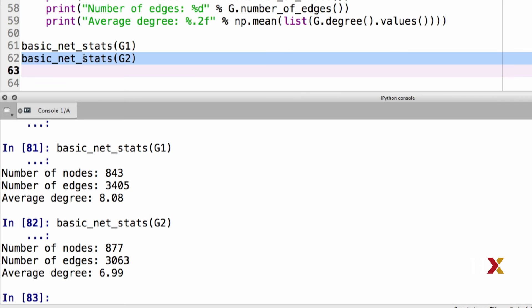We can then run it on G2, which corresponds to a network in a different village. And in this case, we have 877 nodes, about 3,100 edges, and the average degree is slightly smaller, approximately equal to 7.